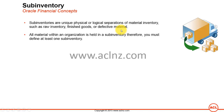A sub-inventory can be a large area — say 600 by 600 meters — with aisles and racks inside. For that you define locators, which clearly identify where a specific item is stored. All materials within an organization are held in a sub-inventory, so you must define at least one. Since sub-inventory stores items and transacting them affects valuation, you also provide accounting information at the sub-inventory level.